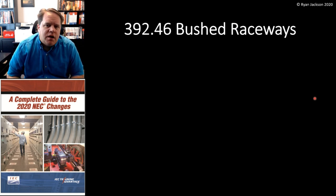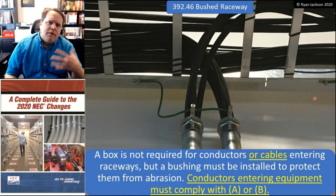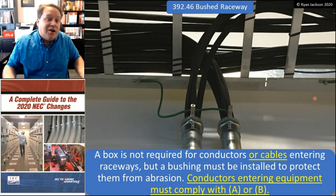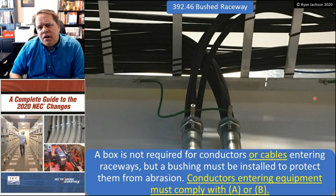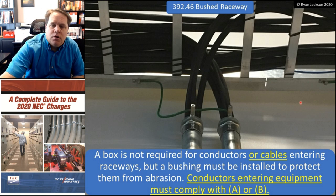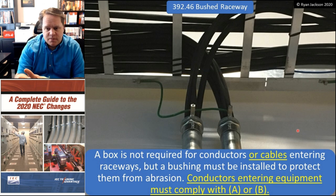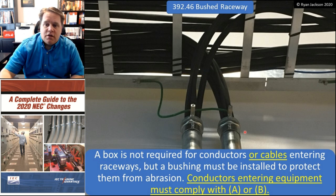The last change in the 2020 NEC for cable trays is 392.46 — new requirements for a common practice were added. It's funny how we'll do something for a hundred years and the code doesn't actually talk about it. So 392.46 Bushing Raceways: a box is not required for conductors or cables entering raceways from a cable tray, but a bushing has to be installed to protect them from abrasion. Conductors entering equipment must comply with A or B.